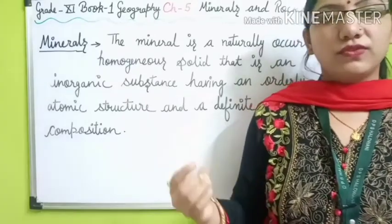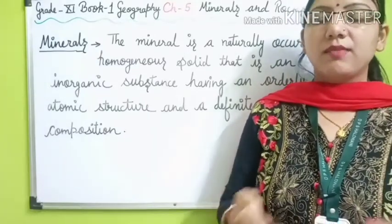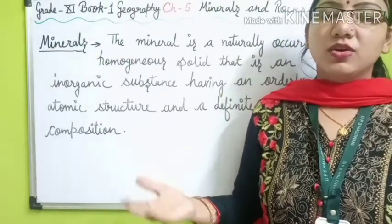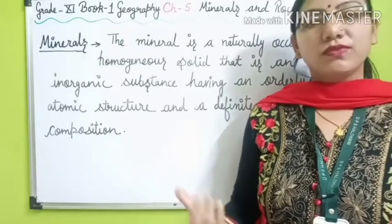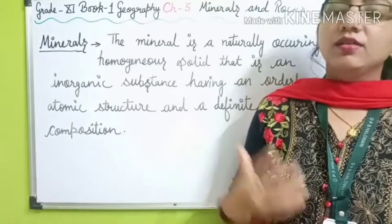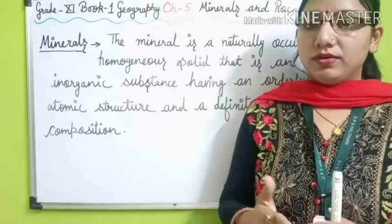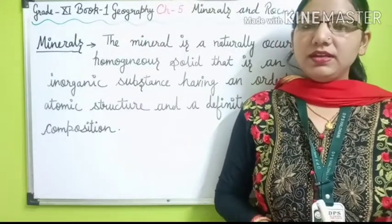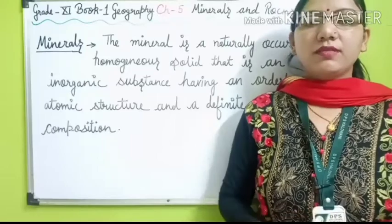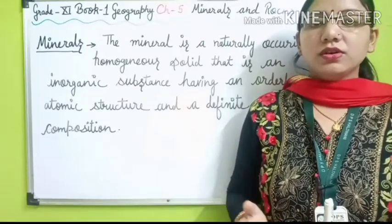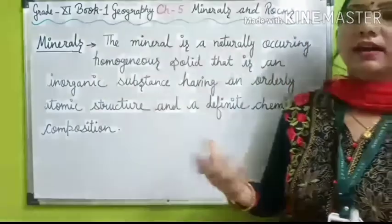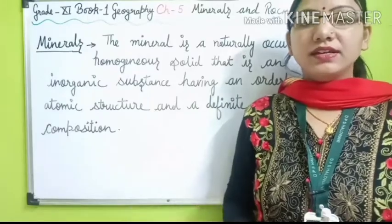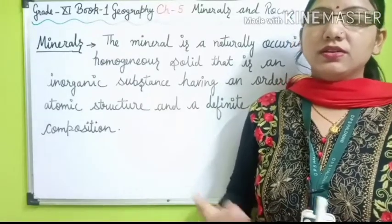The study of minerals is called mineralogy. A mineral can be made of a single chemical element or, more usually, a compound — so a mineral can be in a single form or a compound form. There are already at least two thousand minerals that have been named and identified in the earth's crust.